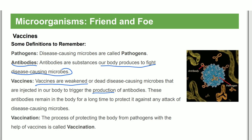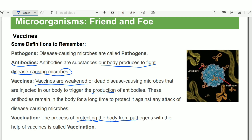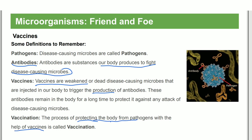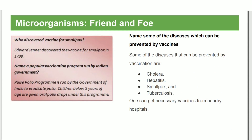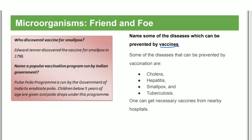Vaccination is the process of protecting the body from pathogens — disease-causing microbes — with the help of vaccines. Some diseases that can be prevented by vaccines include polio, measles, and others.